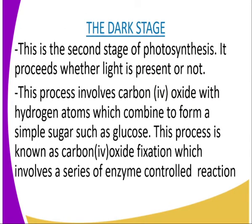The second stage is the dark stage. The products from the light stage go into the dark stage, where light might be present or not. Another name for the dark stage is the light-independent stage, meaning this stage does not depend on light to take place. This process involves carbon dioxide and hydrogen atoms combining to form a simple sugar such as glucose. This process is known as carbon dioxide fixation, which involves a series of enzyme-controlled reactions.